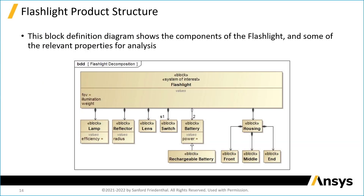In this view, this is the first white box view where we are starting to look at the components that make up the flashlight. You see the flashlight is composed of a lamp, a reflector, a lens, a switch, actually two batteries, and a housing which is further composed of a front, middle, and end.